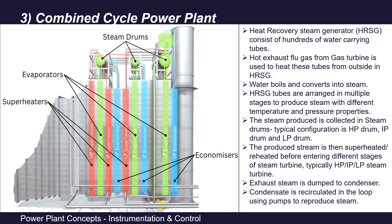Steam drums are located above the heated tubes. Steam rises up and is collected in the drums — the lower side is water and the upper side is steam. From the top of these drums, the steam is extracted and again superheated to make it suitable for steam turbine entry, so that it does not contain any water particles — otherwise it could cause corrosion of the turbine blades. This superheated steam is then passed to the steam turbine blades, the blades rotate, and electricity is produced.